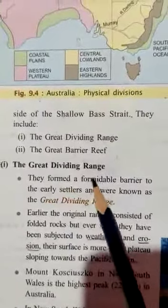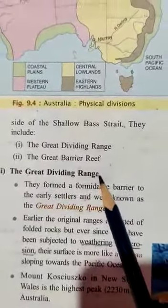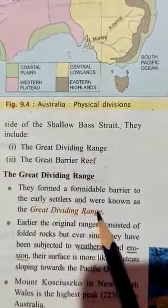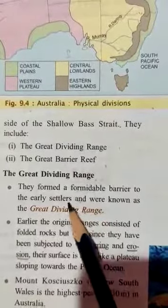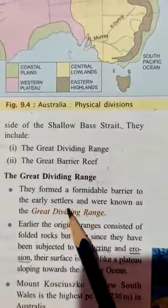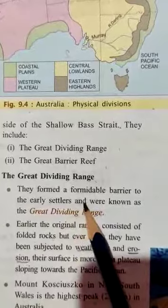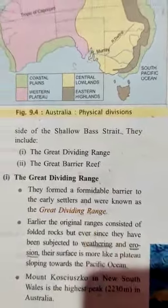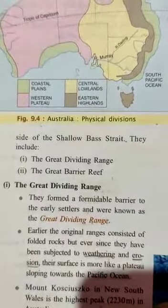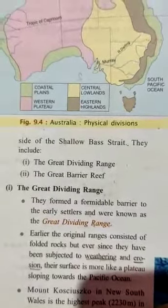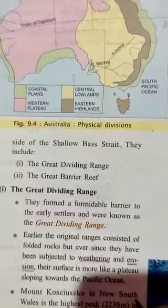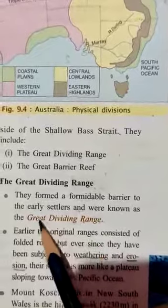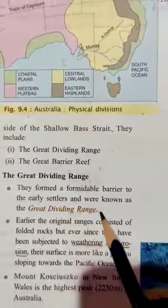The Great Dividing Range. Let me tell you why it is called the Great Dividing Range - because of two reasons. First, it was prohibited for the early settlers to go into the Great Dividing Range. The second reason is that its slopes divide the water flow of the rivers of this region. Because of these two reasons, it is known as the Great Dividing Range.